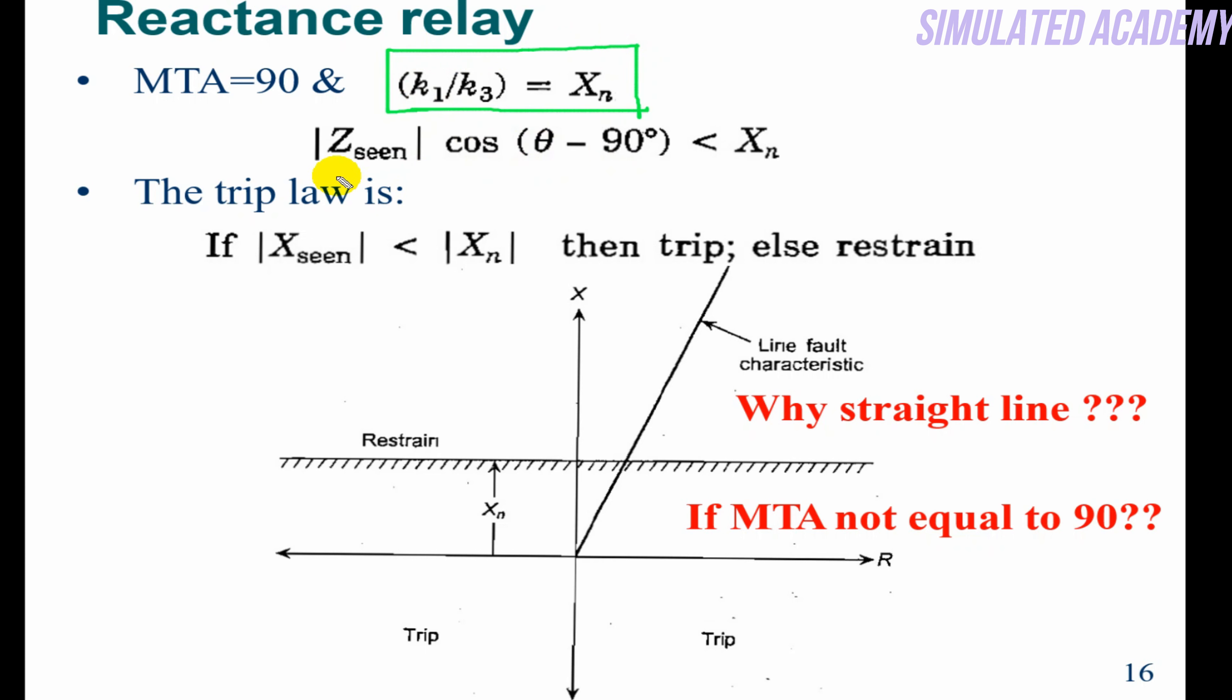So Z_seen cos(θ - 90°), when simplified, becomes sin(θ). And sin(θ) equals what? Z_seen sin(θ) equals X. So X_seen—if it's less than X_n (the threshold value, the set value)—the relay will operate; otherwise the relay will not operate.